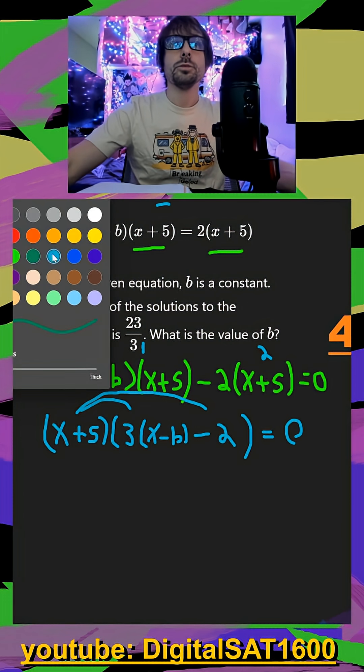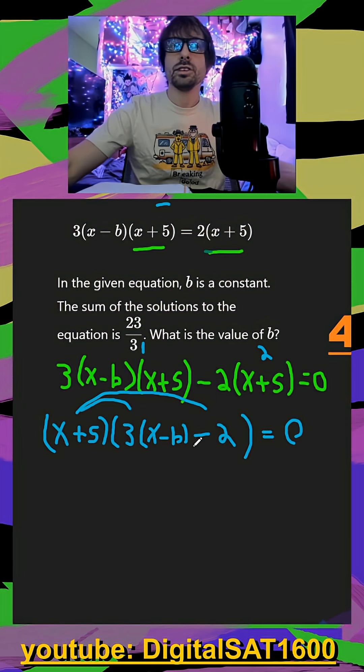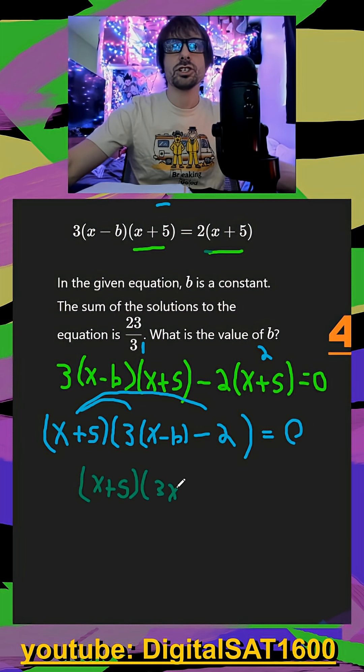All I have to do is simplify my right parentheses here. So my left one is still x plus five. My right one is going to be three x, I'm just distributing, three x minus three b and then minus two.